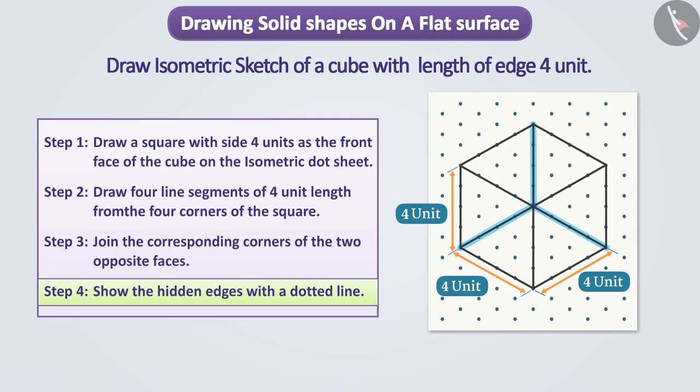Step 4. Now we will show the hidden edges with a dotted line. In this way, we have drawn a proportionate representation of the cube. We will get to know it better in the next video.